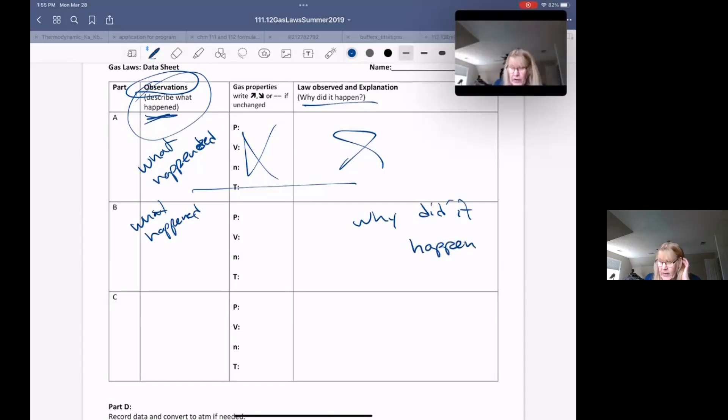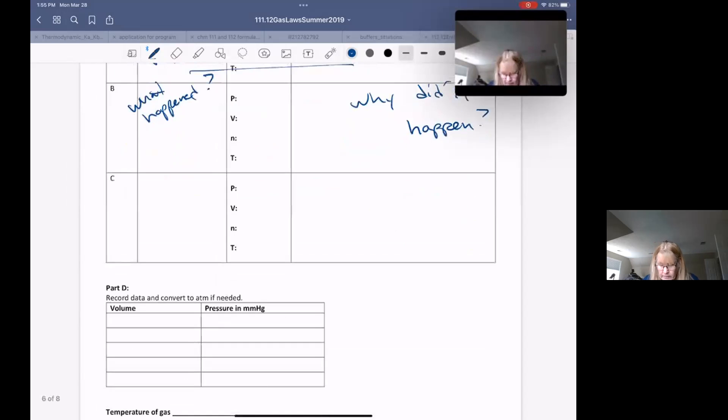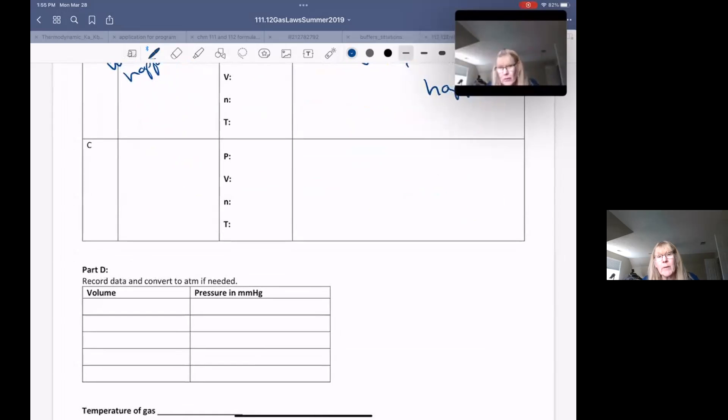And again, if you tell me that the low pressure sucked something in or something got sucked in or vacuums did something, you will get a very low grade. Because again, a vacuum is an absence of something. Absences can't do anything.